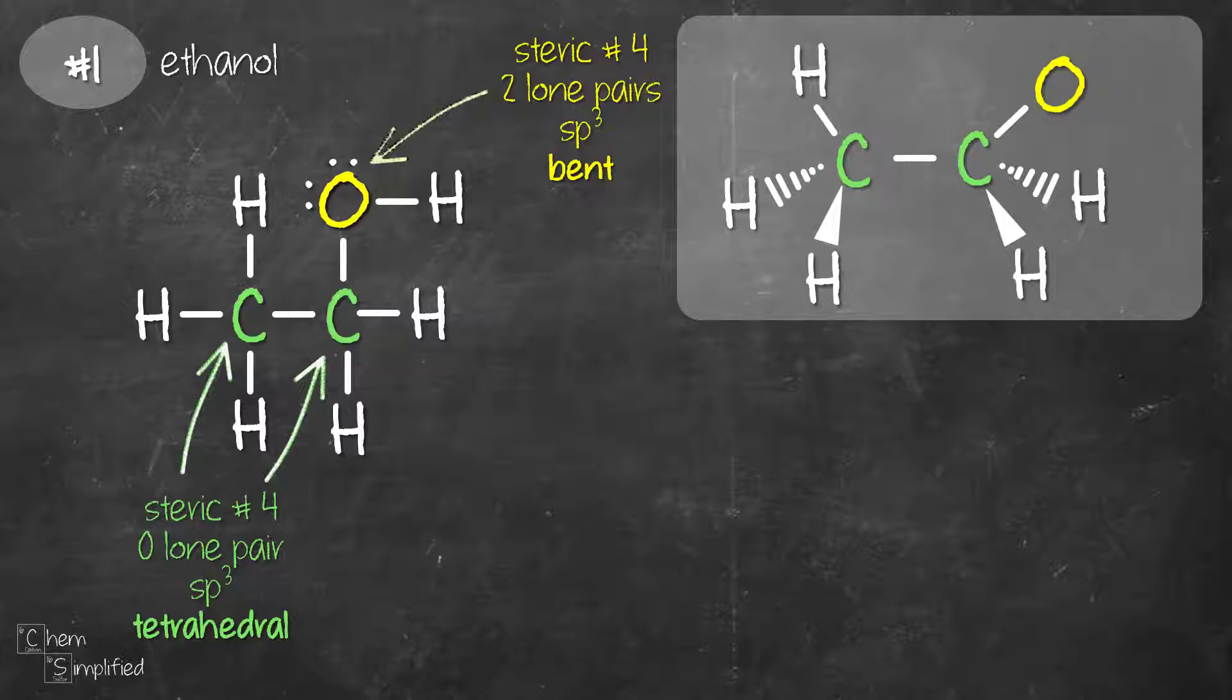Now the oxygen has a bent geometry. That means the bond to hydrogen should be bent like this, and then we add in the lone pairs and we're done.